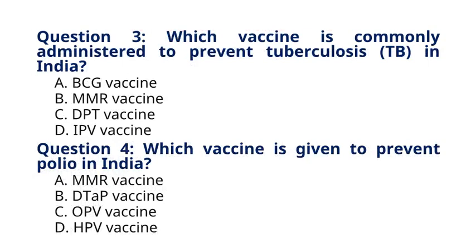Question 3. Which vaccine is commonly administered to prevent tuberculosis, TB, in India? A. BCG vaccine. B. MMR vaccine. C. DPT vaccine. D. IPV vaccine. The correct answer to question 3 is option A, BCG vaccine. The Bacillus Calmette-Guérin, BCG, vaccine is commonly administered to prevent tuberculosis, TB, in India, especially to infants shortly after birth.